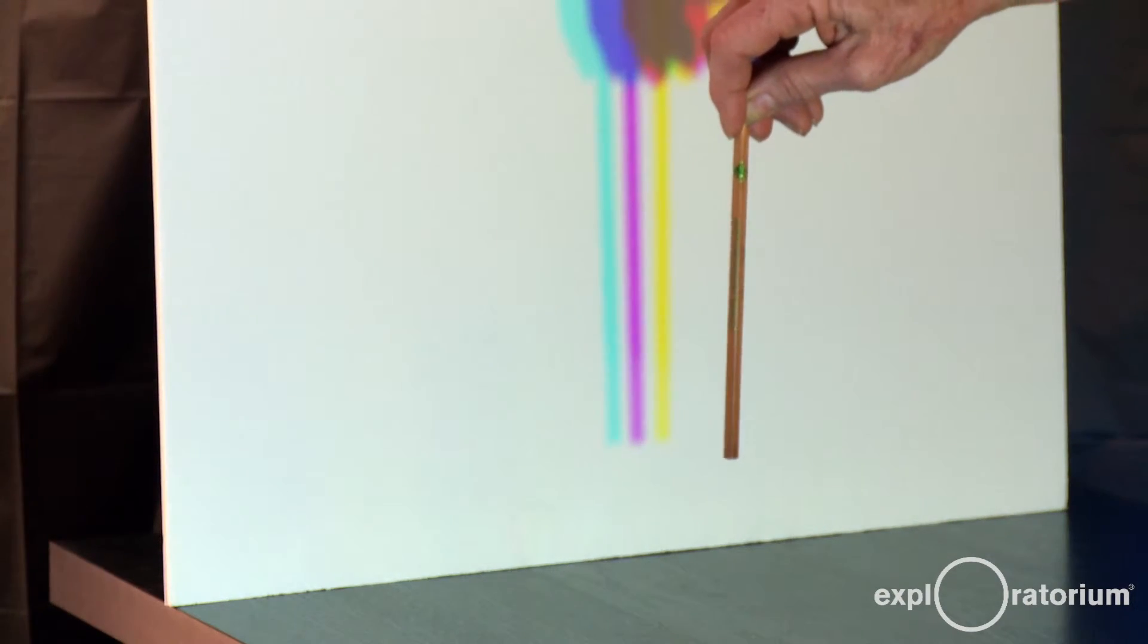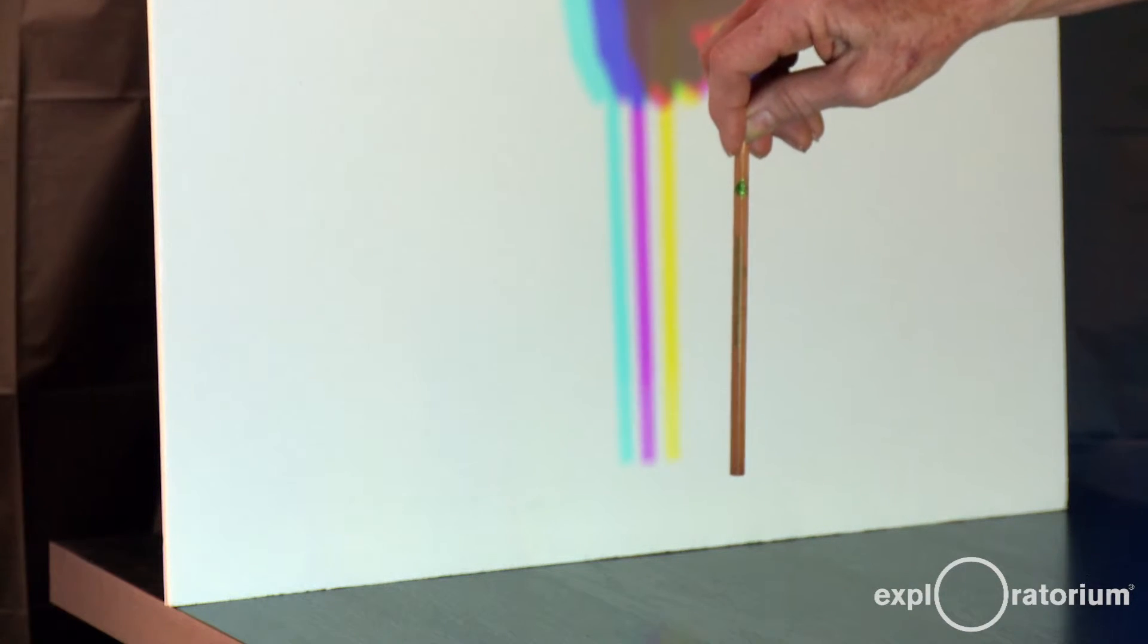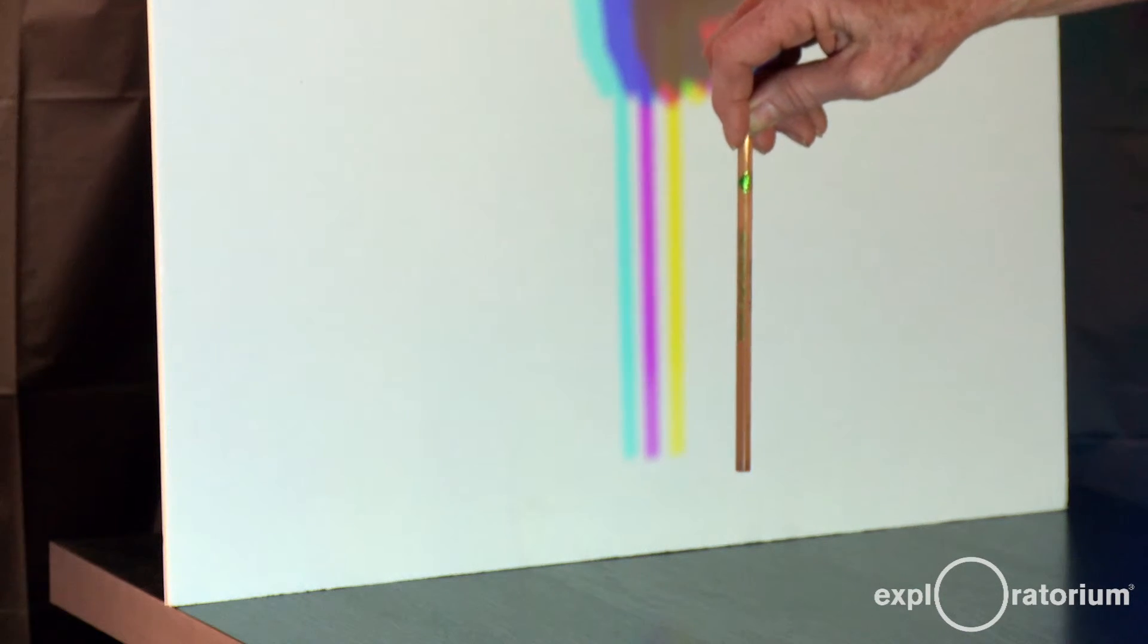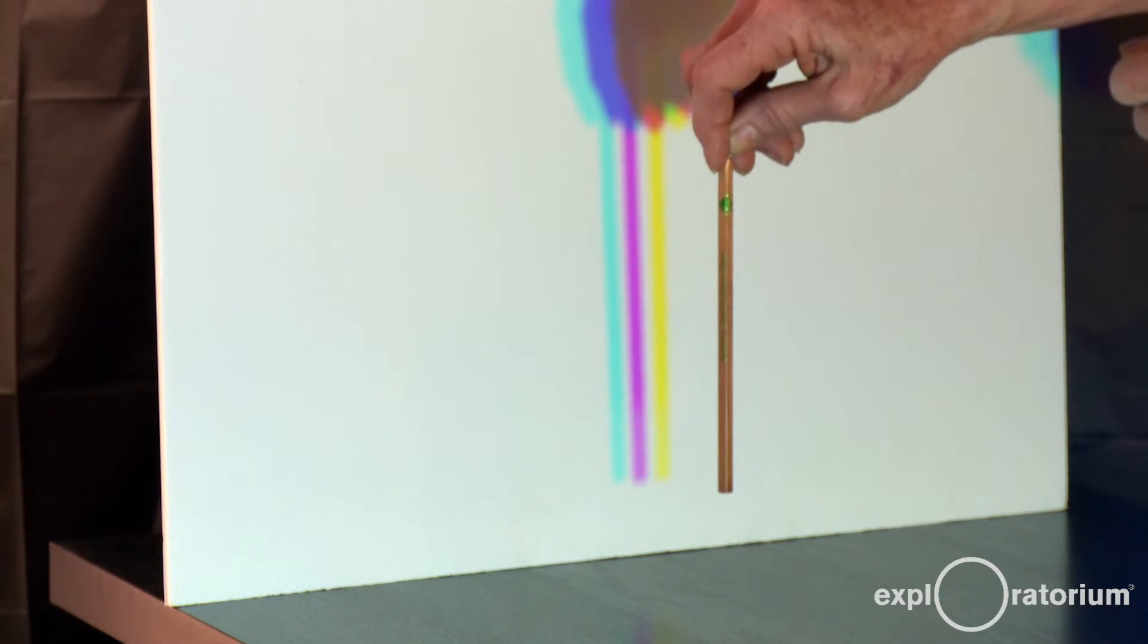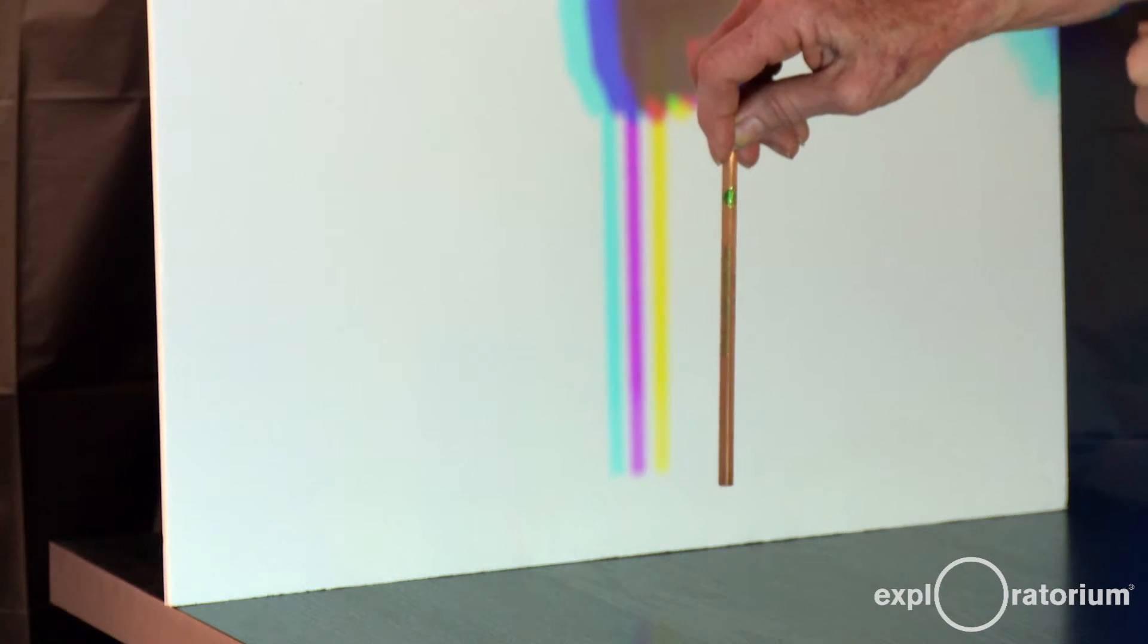In the middle, the pencil is blocking the green light. In that shadow, the red and the blue light scatter off the board. And we know now that red plus blue equals magenta.